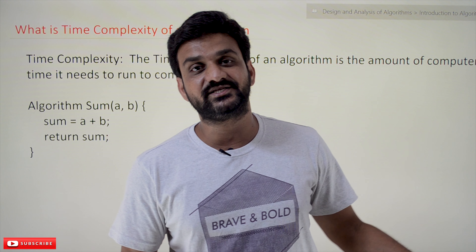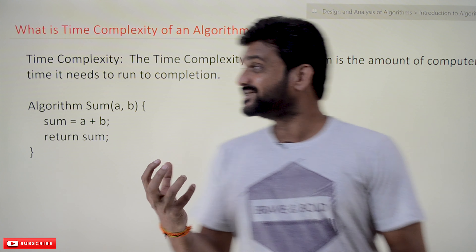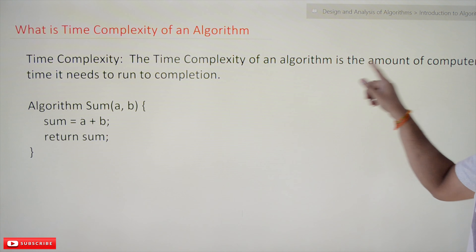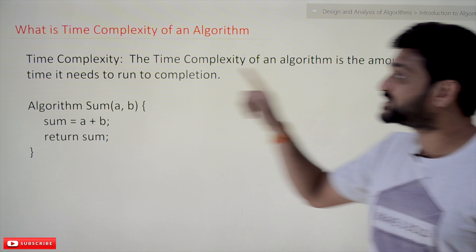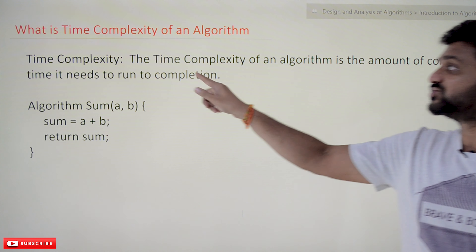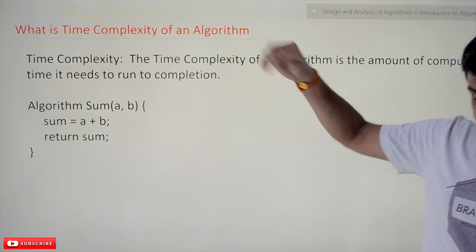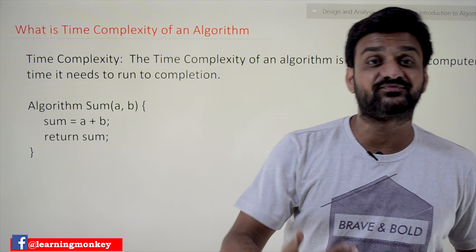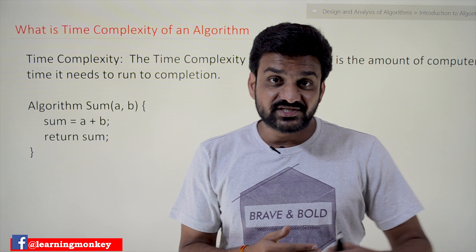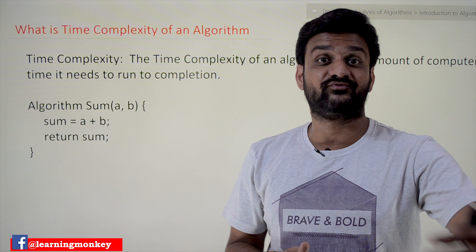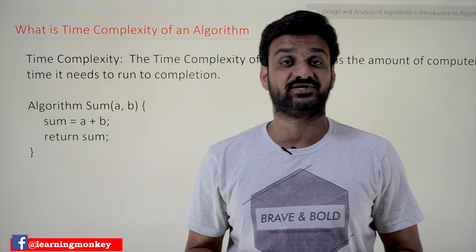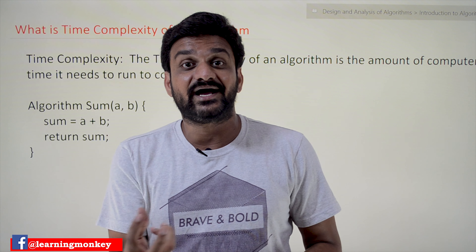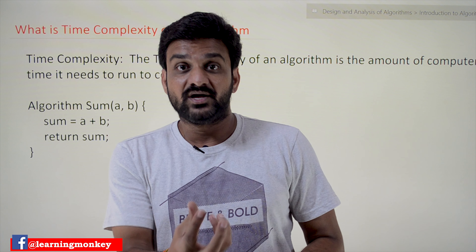Now, what is the time complexity of an algorithm? The time complexity of an algorithm is the amount of computer time it needs to run to completion. It looks very simple, but for a better understanding of the concept of time complexity, we are going to discuss this concept for the next four to five videos with lots of examples. So try to focus, because this is the point where you need to get a clear idea of the concepts.